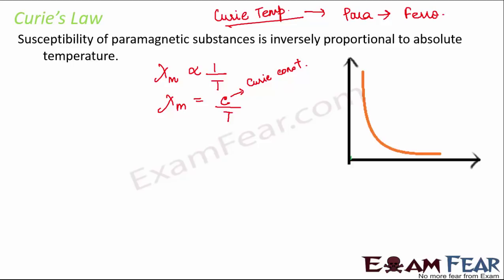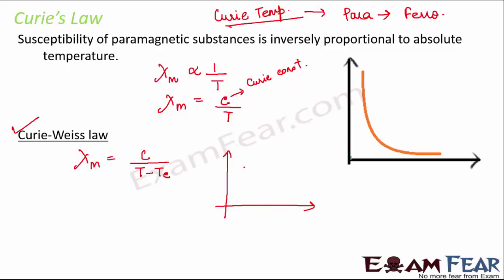For paramagnetic substances, chi m is positive and small; for ferromagnetic substances, chi m decreases with increase in temperature. Curie's law was further modified to Curie-Weiss law, which states chi m equals c by T minus Tc, where Tc is the Curie temperature. At the temperature T equals Tc, the paramagnetic substance changes into a ferromagnetic substance.